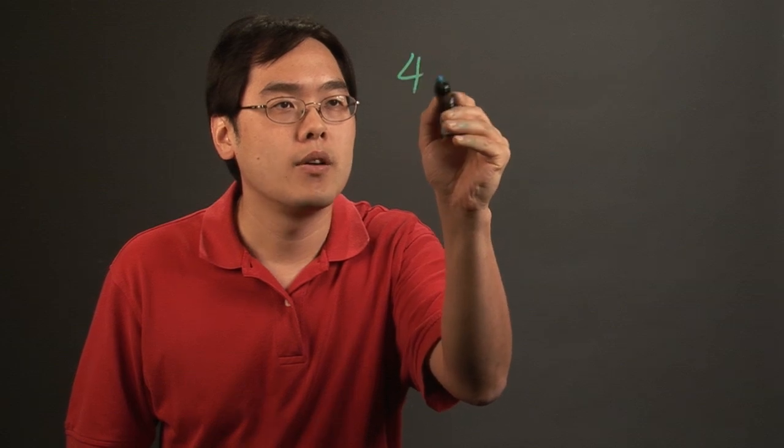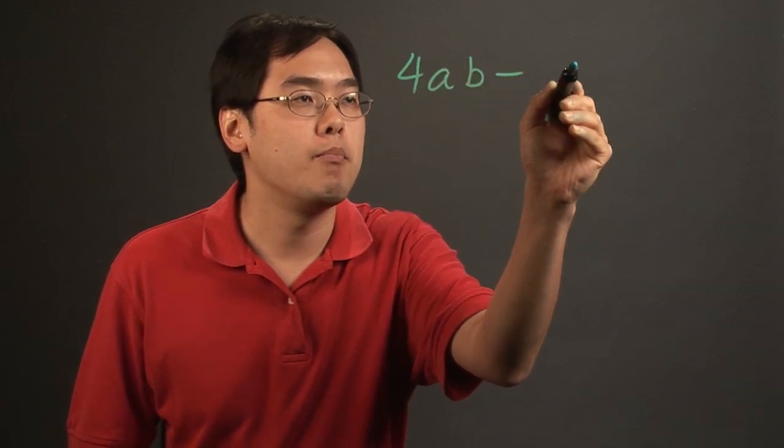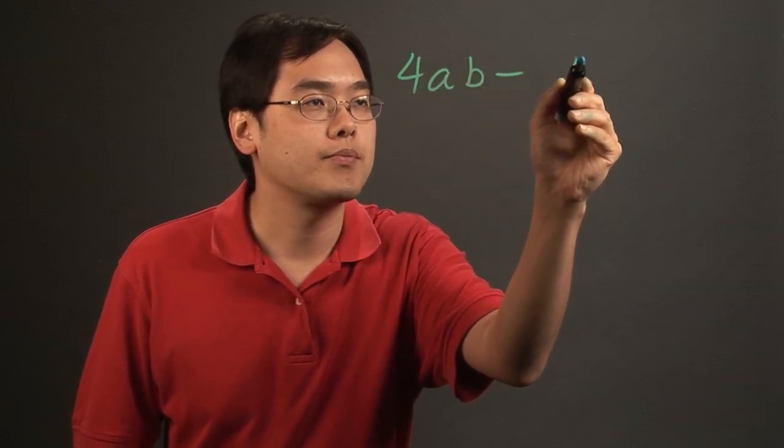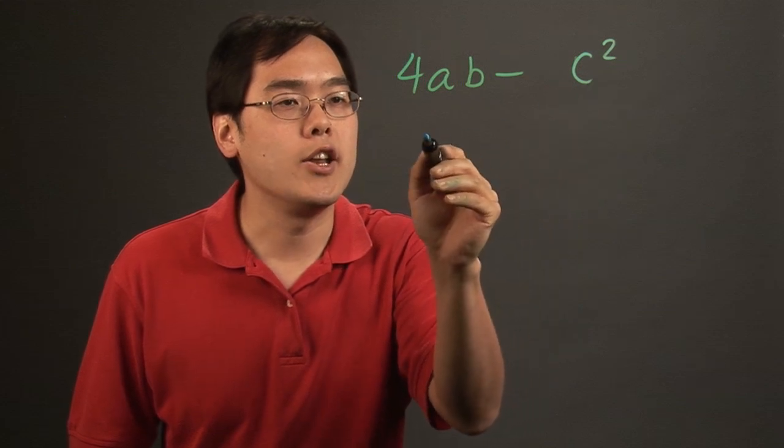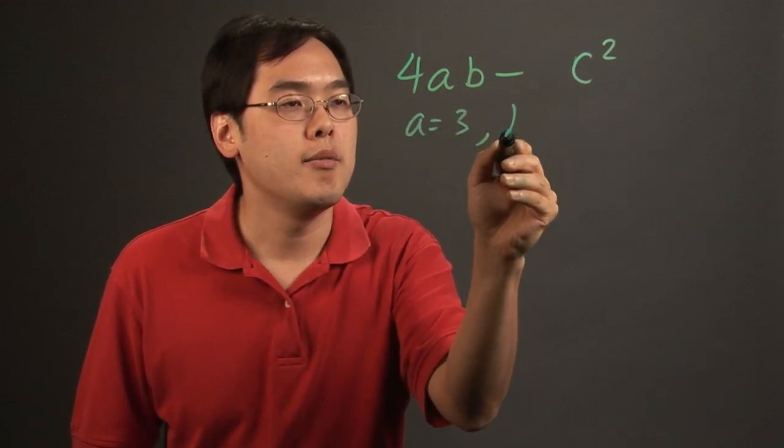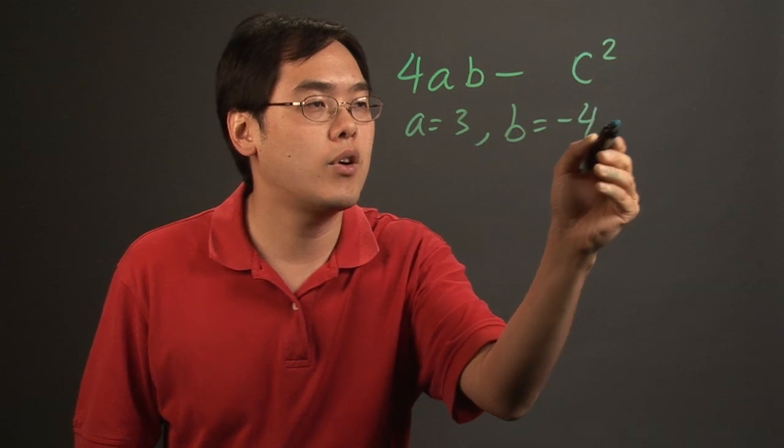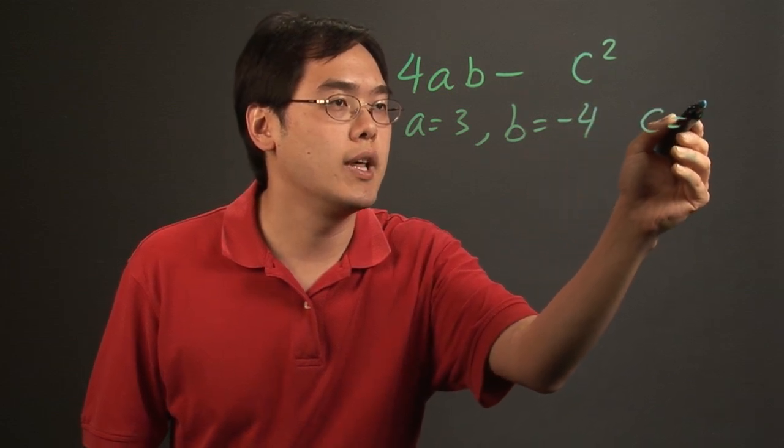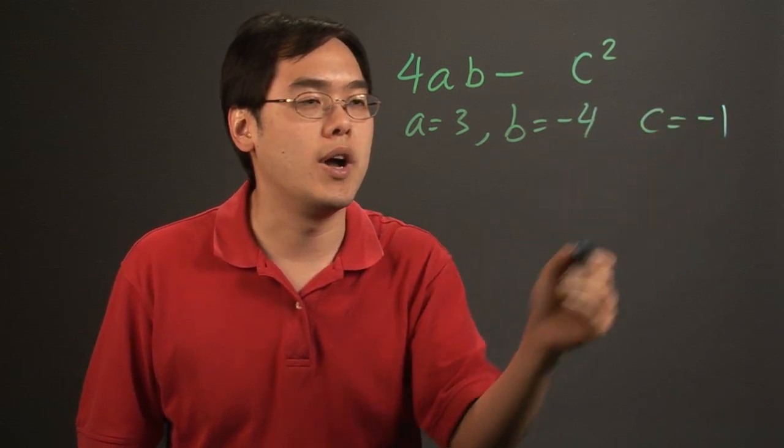Suppose you want to evaluate 4ab minus c squared, and you're given that a equals 3, b equals negative 4, and c equals negative 1.